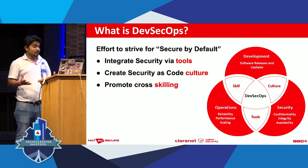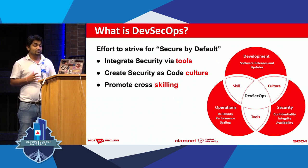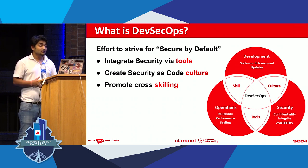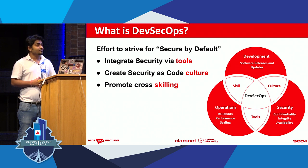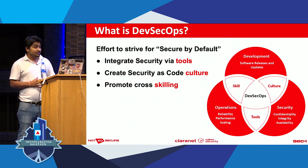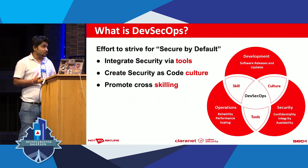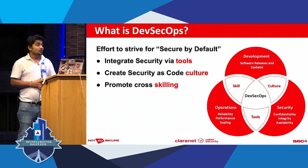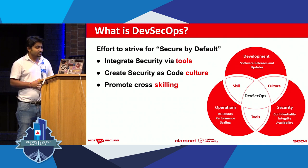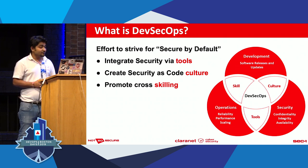What is DevSecOps? DevSecOps is basically a process or an effort where you try to be secure by default. You achieve a secure-by-default state by integrating security via tools, by creating a security-technology-as-code culture, and by promoting cross-skilling. Instead of having three separate teams doing three different jobs — Dev, Sec, and Ops — you need one unified team that takes care of all three components. That's the aim of DevSecOps.